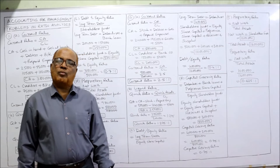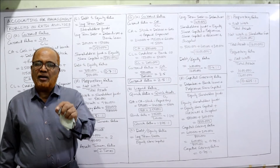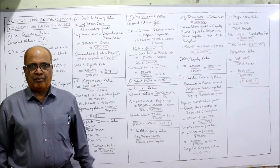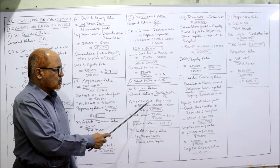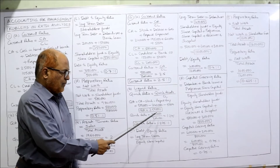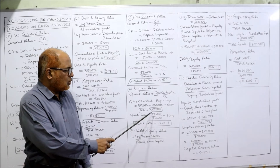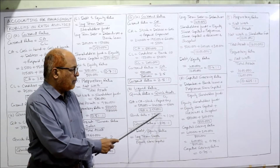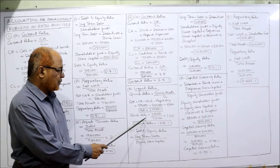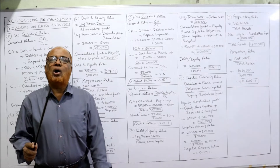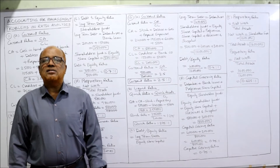Next ratio: liquid ratio — sometimes called quick ratio, they mean the same. Quick assets divided by current liabilities. Quick assets equals current assets minus stock minus prepaid expenses. Current assets 5 lakh, minus stock 2 lakh 40,000, minus prepaid expense 5,000, so quick assets are 2 lakh 55,000. Quick ratio: 2 lakh 55,000 divided by 2 lakh equals 1.275 is to 1. That is the liquid ratio.